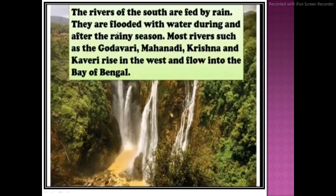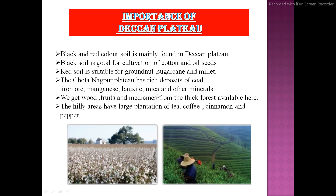The rivers of the south are fed by rain and are flooded with water during and after the rainy season. When water is in greater amounts, floods occur. Most rivers such as the Godavari, Mahanadi, Krishna, and Kaveri rise in the west and flow into the Bay of Bengal.